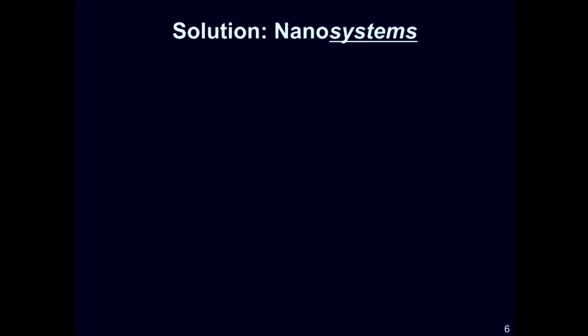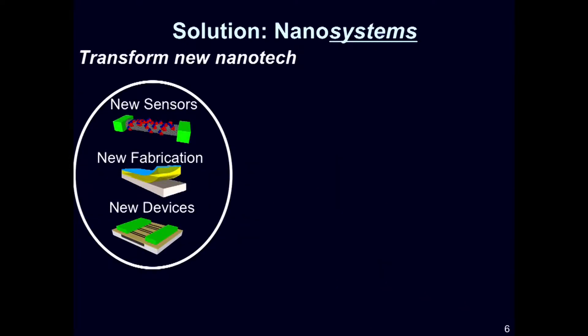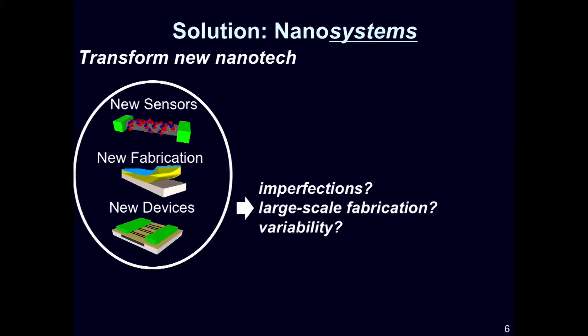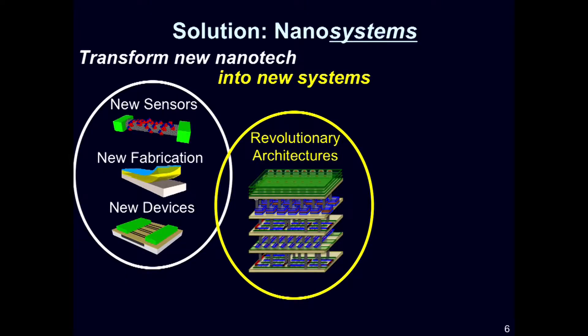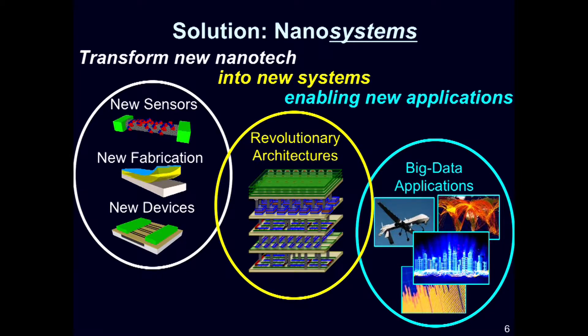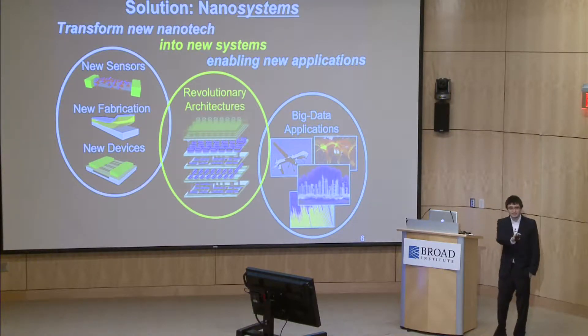So what exactly is a nanosystem? A nanosystem is when we start by taking new emerging nanotechnologies — these enable new types of devices, new fabrication techniques, new types of sensors, etc. And only by first overcoming inherent imperfections, such as large-scale fabrication variability, can we then actually make use of these benefits, allowing us to combine them all in order to realize revolutionary new system architectures, which in turn enable a whole new class of future applications such as big abundant data applications. It's only by connecting and combining the right emerging technologies with the right system architectures for the right applications that we can achieve truly massive benefits.